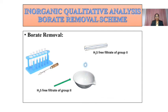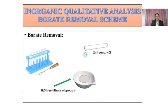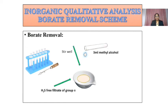Take this H2S-free filtrate in an evaporating dish and add 2 ml of concentrated HCl. After the addition of 2 ml concentrated HCl, add 3 ml of methyl alcohol. Now stir this mixture well using a glass rod.